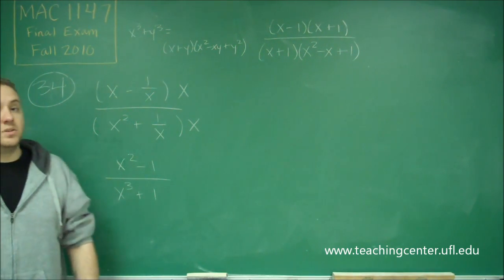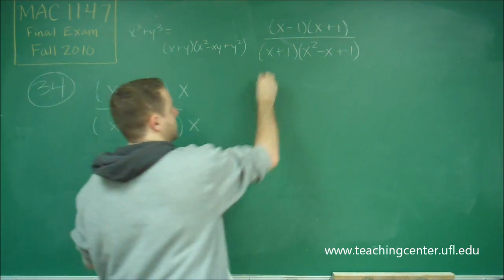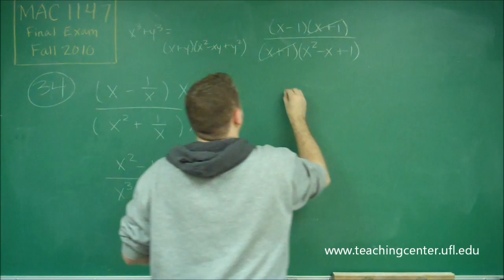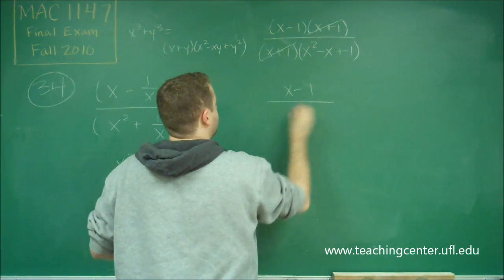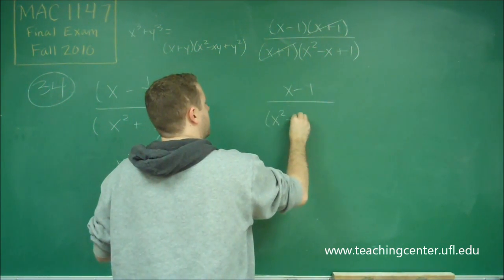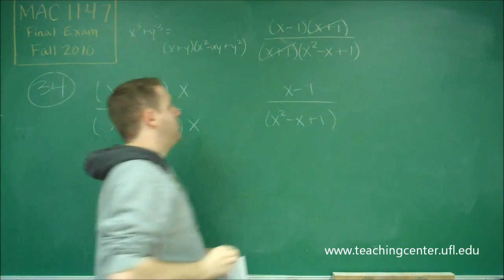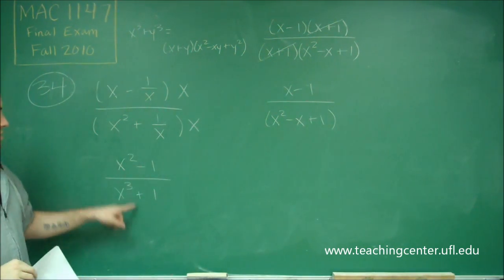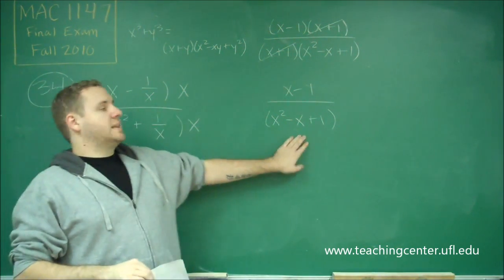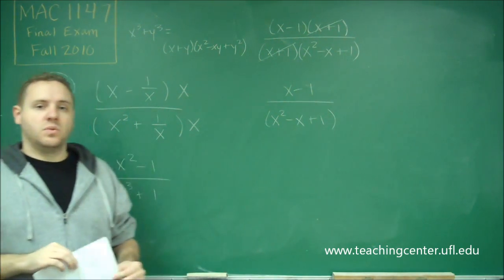You can see we can actually factor out one more thing here because x plus 1 cancels out. Remember that when you factor the sum or difference of two cubes, the quadratic that's left is never factorable, so don't worry about that.